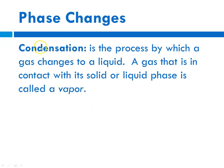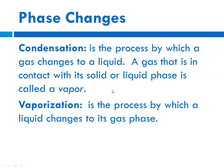With phase changes, let's look at the first two: condensation, which is the process by which a gas changes to a liquid. Remember that a gas that is in contact with its solid or liquid phase is referred to as a vapor. And then we have the process of vaporization, which is the general term used for the change from a liquid to its gas phase. Vaporization may occur at temperatures below the boiling point — for instance, if you have a puddle of water on your counter and you come back two days later, the puddle is gone. It never boiled, but it changed from liquid to gas.